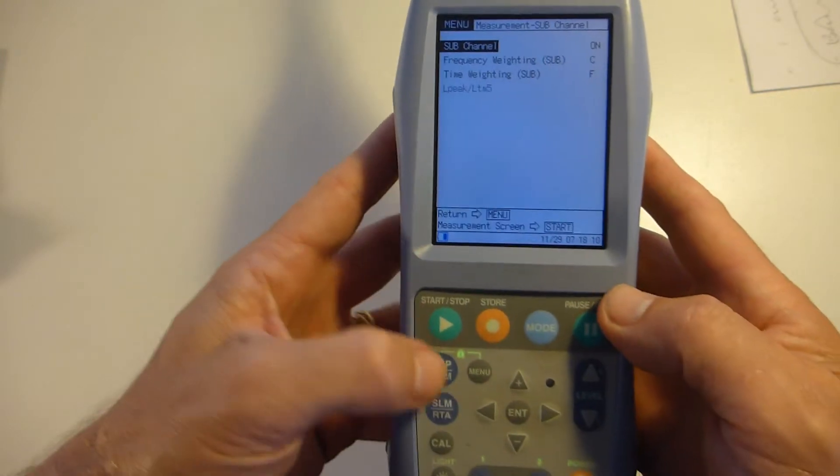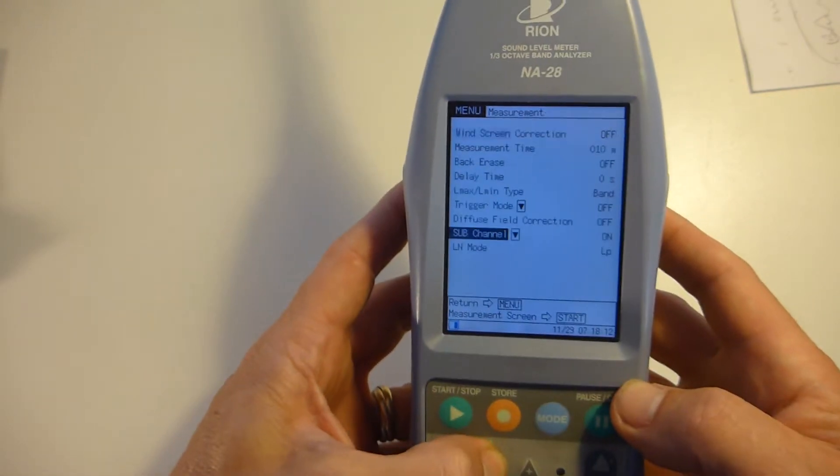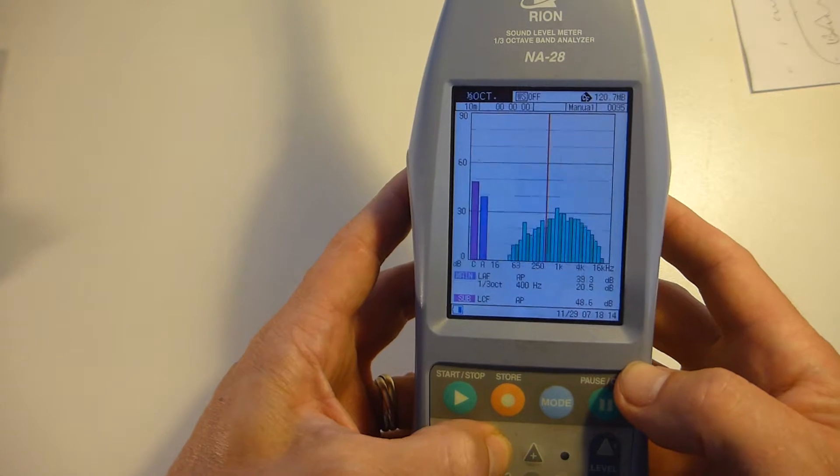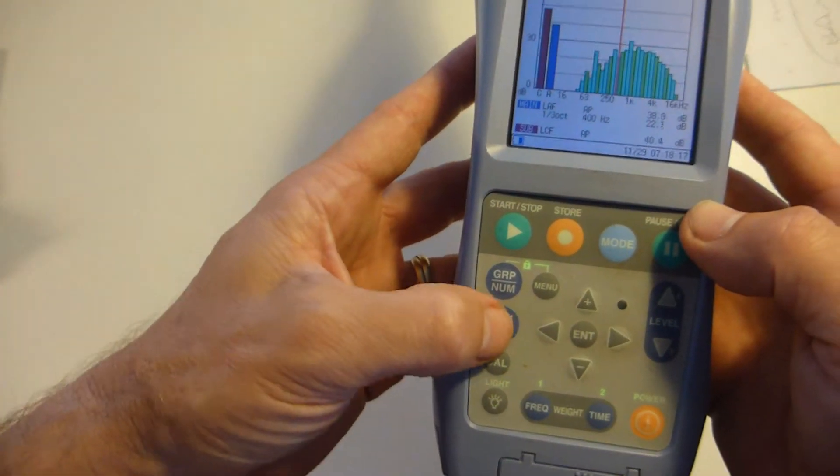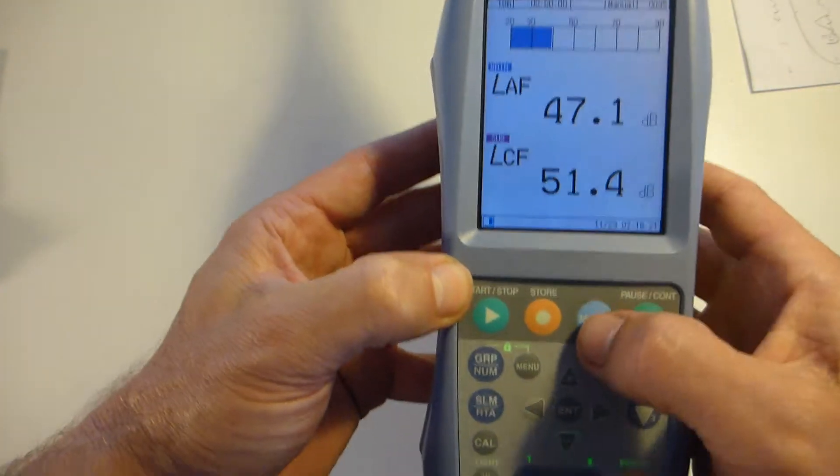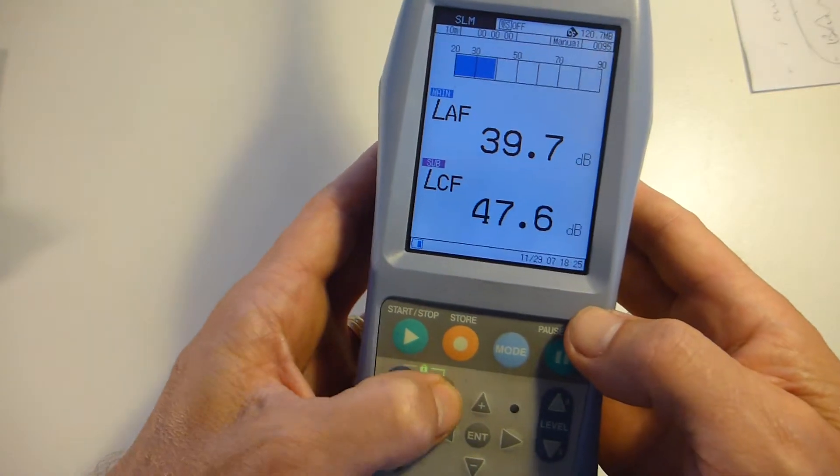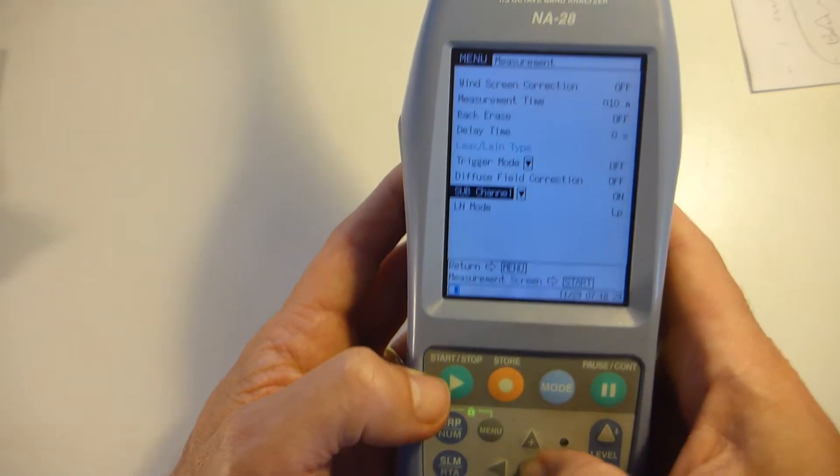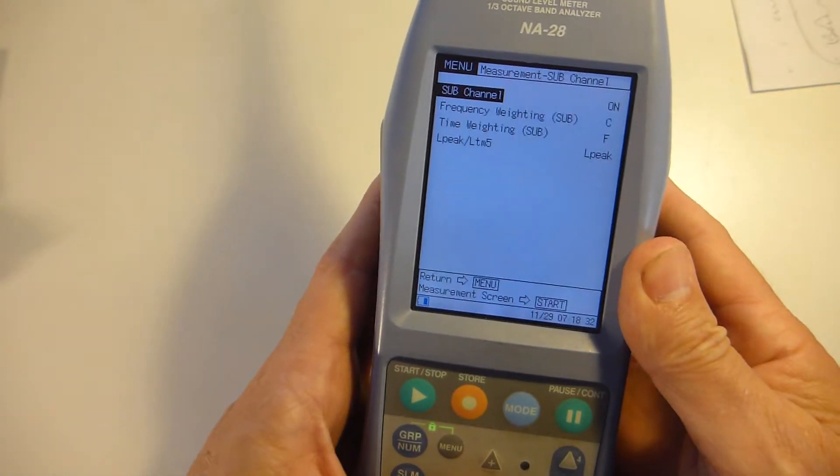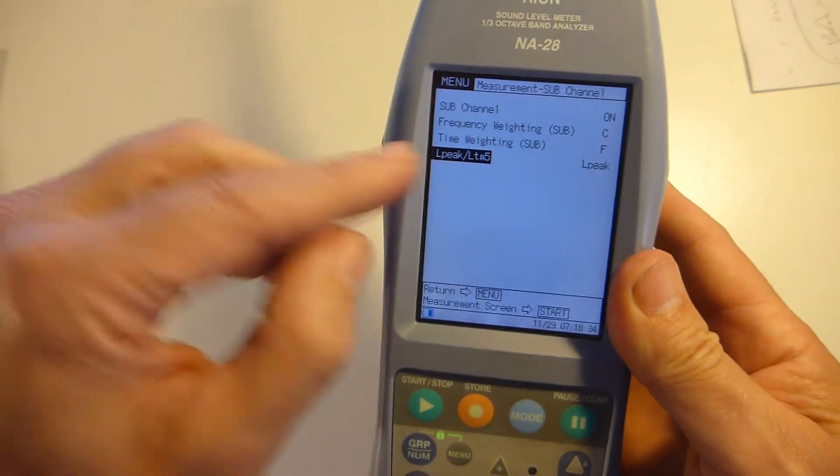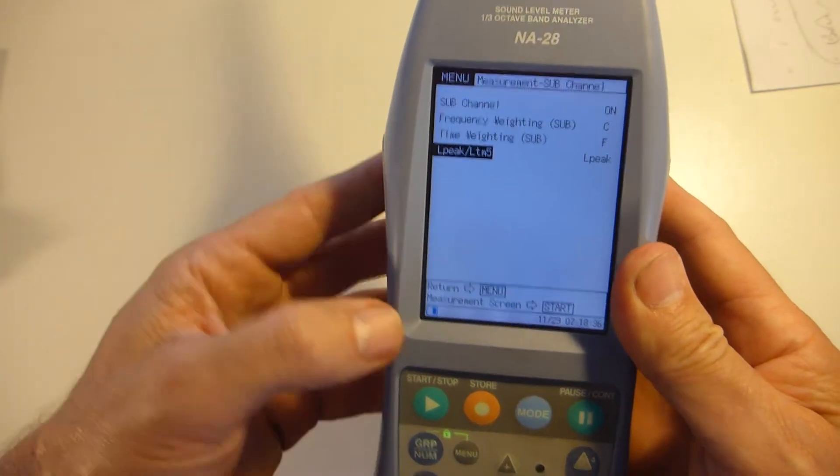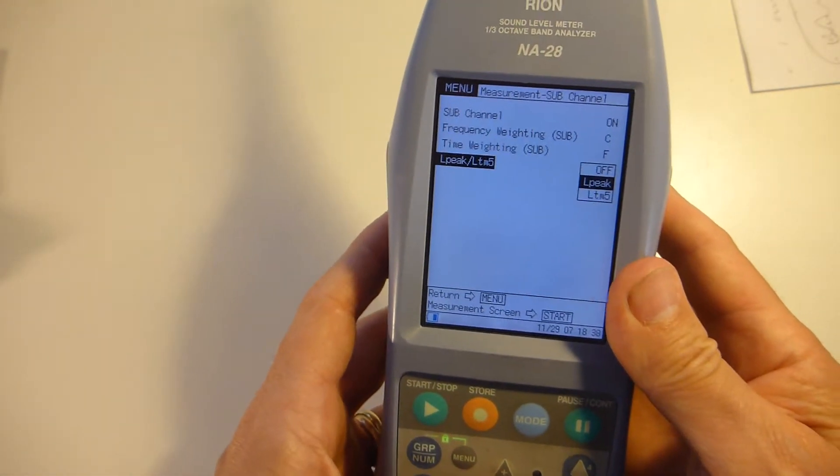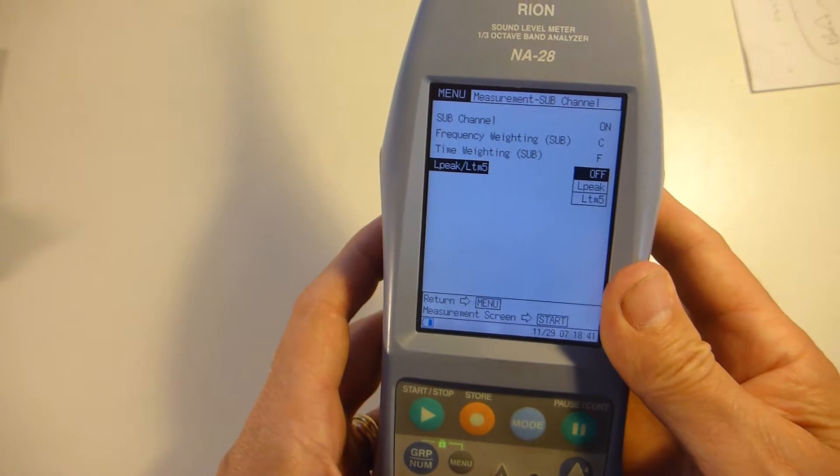This has been brought up with Rion. Their answer is, well, if you don't like it, don't buy it. What you have to do is go into sound level meter mode, and you'll find then that the sub channel now displays the option for either LTM 5 or L peak, which you can see. That's what I've got it set on there: fast weighting C and LC peak.